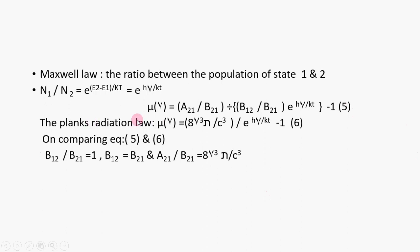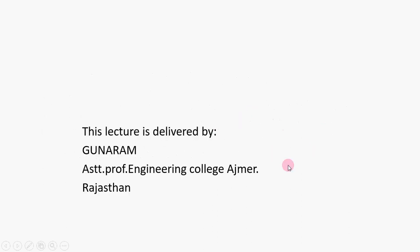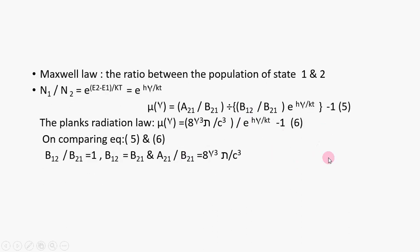Now you already studied at school level the black body radiation, the Planck's radiation formula. The Planck's radiation law: μ(ν) = (8πhν³ / c³) / e^hν/kT - 1 equation 6. On comparing equation 5 and 6, we get B12 / B21 = 1, B12 = B21, and A21 / B21 = 8πν³ h/c³.